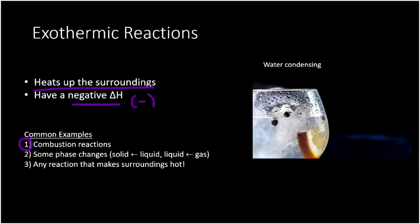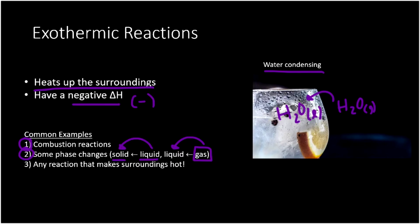Some phase changes are also exothermic. For example, going from liquid to solid — freezing water — is the opposite of melting. Melting ice is endothermic, but forming an ice cube brings water molecules into a structured arrangement, increasing hydrogen bonding and releasing energy to the surroundings. Similarly, going from gas to liquid is condensation. Water vapor in the atmosphere condenses on the surface of a glass into liquid H₂O, and your glass gets warm because condensation is an exothermic process. Any reaction that makes surroundings hot is exothermic.